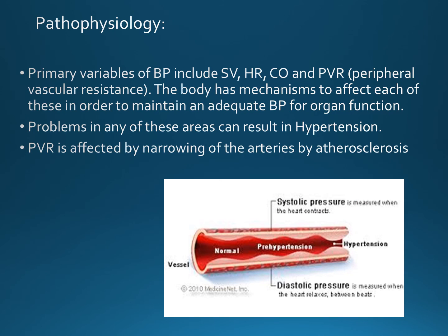Remember that the primary variables of perfusion include stroke volume, heart rate, cardiac output, and peripheral vascular resistance, which is directly related to the size of the arterial lumen. The body has mechanisms to affect each of these in order to maintain adequate blood pressure for organ function, and problems in any of these areas can result in sustained hypertension.